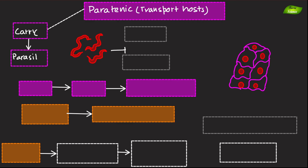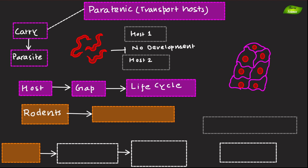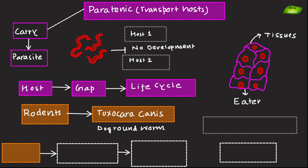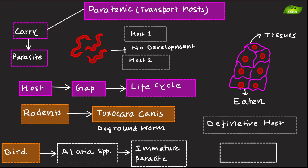Paratenic hosts carry the parasite to another host without the parasite undergoing any development. These hosts help bridge the gap in the parasite's life cycle. For example, rodents can act as paratenic hosts for the dog roundworm Toxocara canis — the larvae reside in the rodent's tissue until they are eaten by the definitive host, typically a dog. A second example is birds for Echinacea species: birds may serve as paratenic hosts carrying the immature parasite until consumed by the definitive host, usually a mammal.